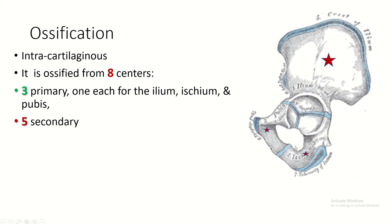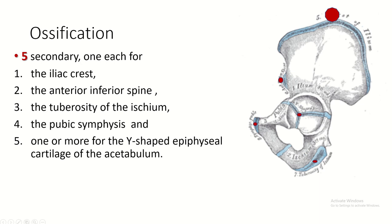The hip bone is ossified from three primary ossification centers: one for ilium, ischium, and pubis; and eight secondary ossification centers: one for iliac crest, one for anterior inferior iliac spine, one for pubic symphysis, one for ischial tuberosity, and one or more than one for Y-shaped epiphyseal cartilage of the acetabulum.